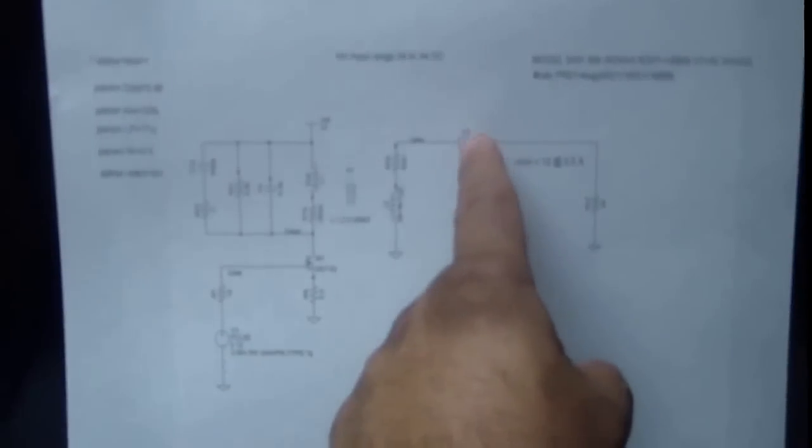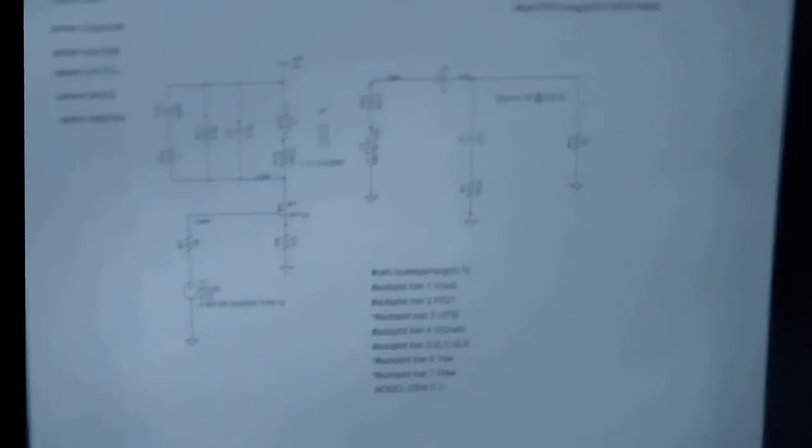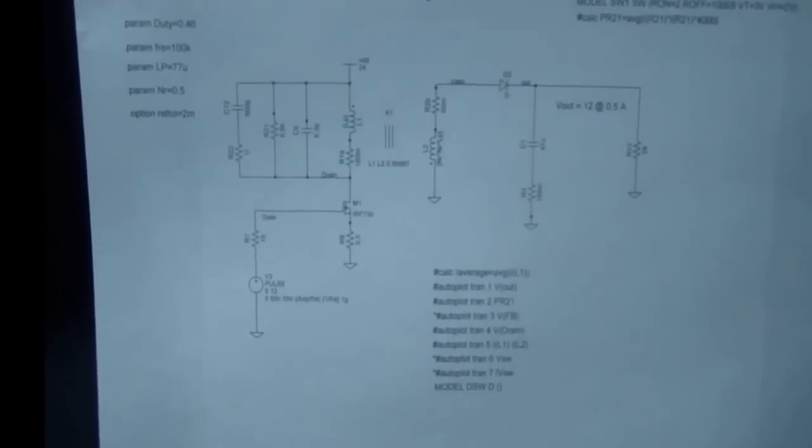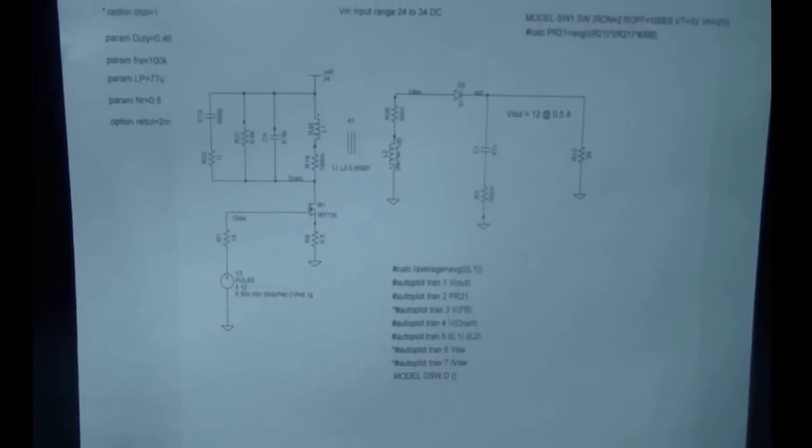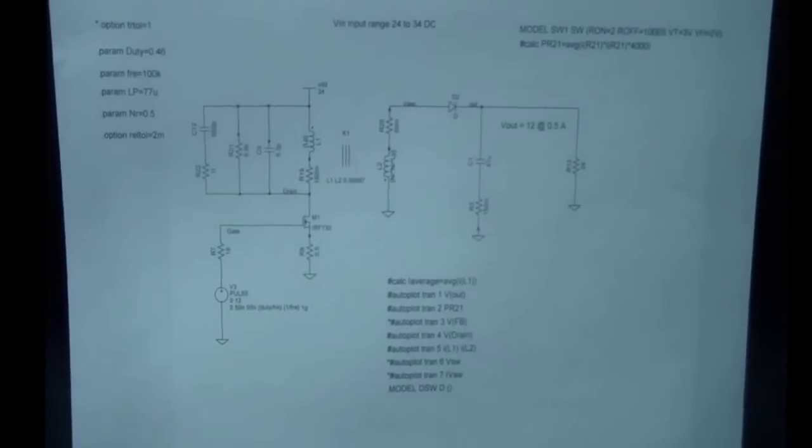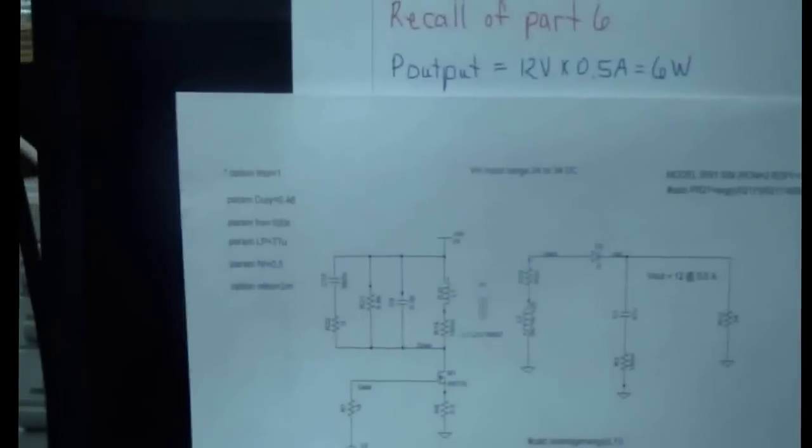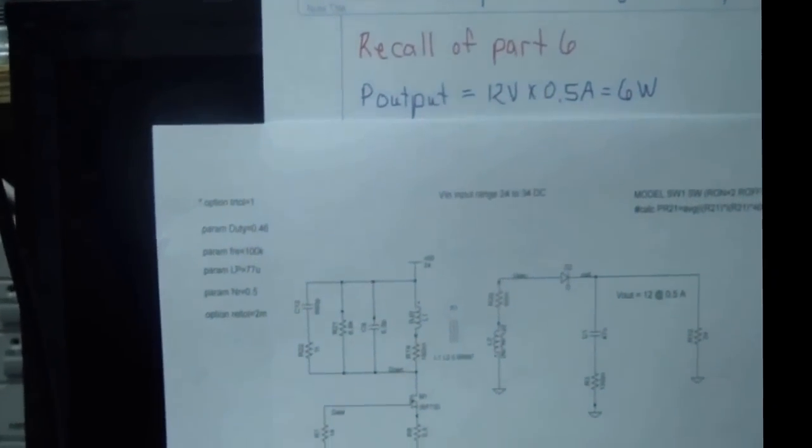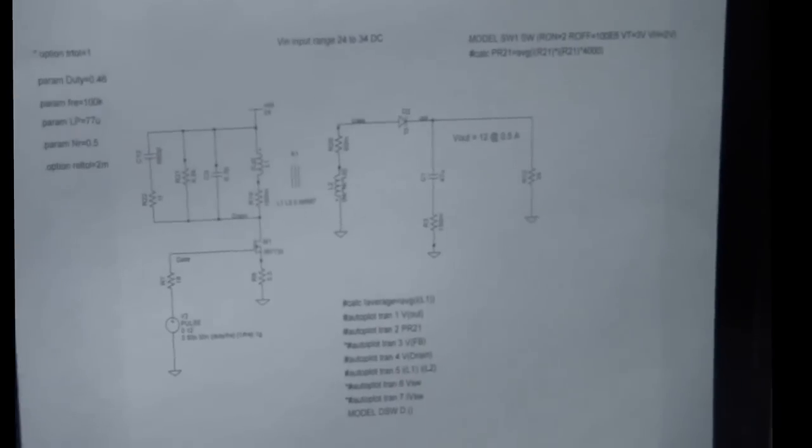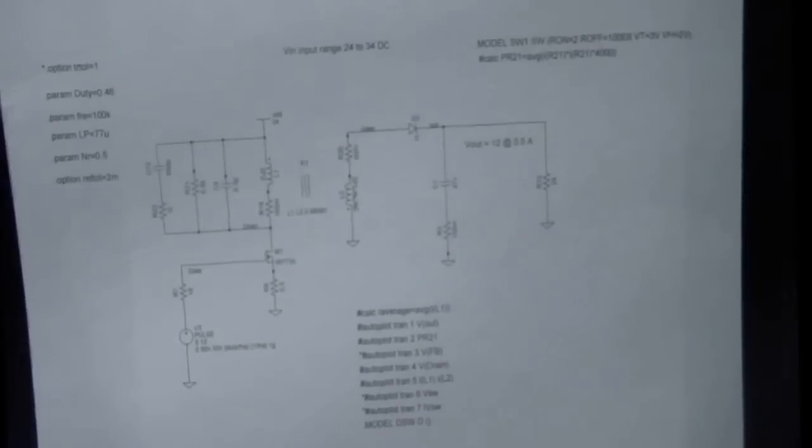Once I did that, I hooked up the diode capacitor and I simulated it by putting a pulse generator at a frequency of 100 kilohertz and an approximate duty cycle of 46%. Here I defined the duty cycle of 0.46. So this is the circuit that I used to simulate—pretty straightforward. Once I simulated it, I got a waveform.